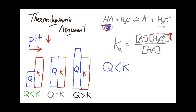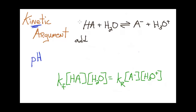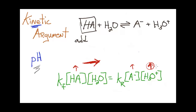Now let's build a kinetic argument for adding HA to the reaction at equilibrium. Addition of HA will cause the forward reaction's rate to suddenly be higher than the reverse reaction because the HA concentration goes up. Therefore, we will see a steady increase in the concentration of the products until the rates re-equilibrate. That results in the H₃O⁺ concentration going up, and when the rates re-equilibrate, the H₃O⁺ concentration will be higher than its original value. When H₃O⁺ goes up, the pH goes down.